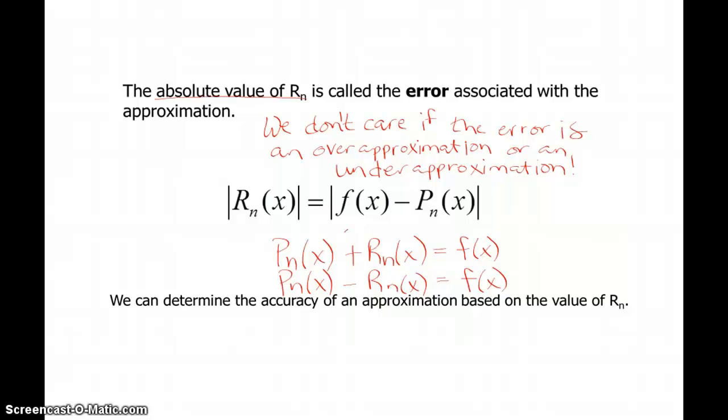In other words, is this an under approximation so I have to add the remainder term, or is this an over approximation so I have to subtract the error term? If we just get the magnitude of the error, we don't worry about whether it's positive or negative. The magnitude of the error, whether over or under approximation, is simply the absolute value of the difference in the output of those two functions at any given value x.